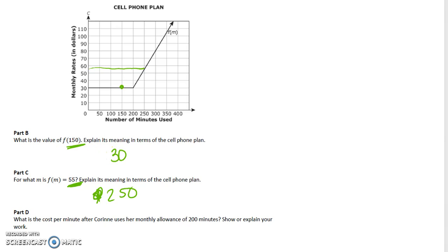It would cost $55 if you use 250 minutes. Part D: what is the cost per minute after we use up those monthly minutes? That cost per minute, we need to use slope, we need to use rate of change. So I can find the rate of change between two points.